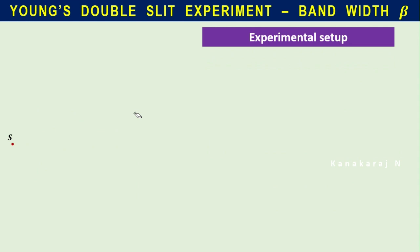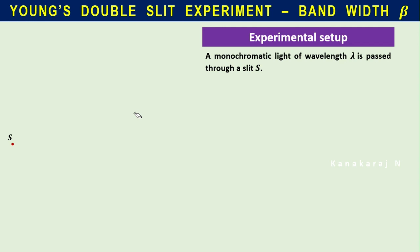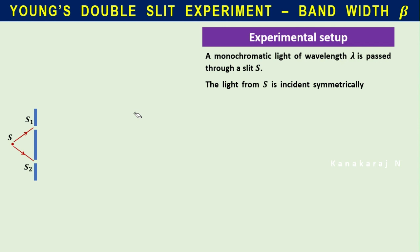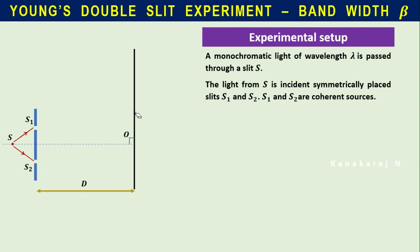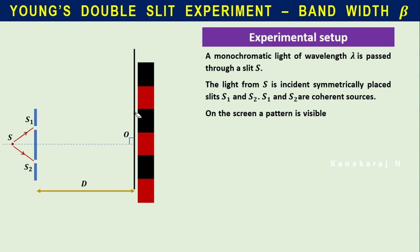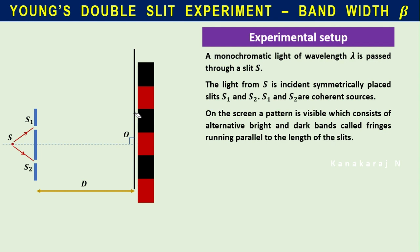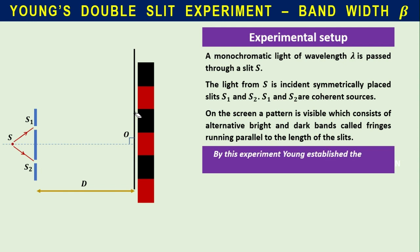Experimental setup of Young's double slit experiment. A monochromatic source of light of wavelength lambda is passed through a slit S. The whole setup is in air medium, so the refractive index is taken as 1. The light from S is incident symmetrically on two slits S1 and S2, which are coherent sources. On the screen, a pattern is visible consisting of alternating bright and dark bands called fringes, running parallel to the length of the slit. By this experiment, Young established the wave nature of light — this is one of the best examples for proving light travels in the form of a wave.